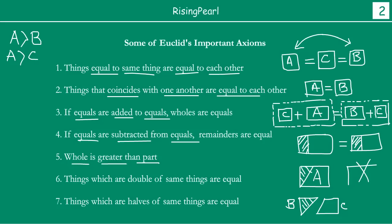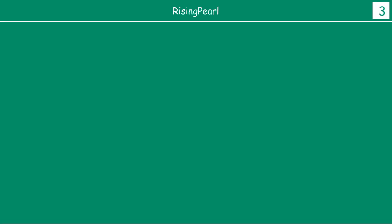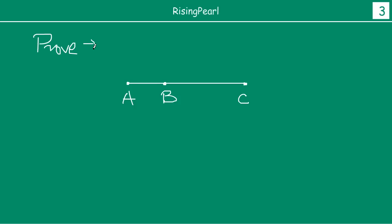You might be thinking, friends, that we have not really discussed how all of these axioms relate to us. So let's do a quick application before we move on to the postulates. Suppose you have a line with point A at one end and point C at the other end, and we put a point B on AC. You are asked to prove that AC is equal to AB plus BC.